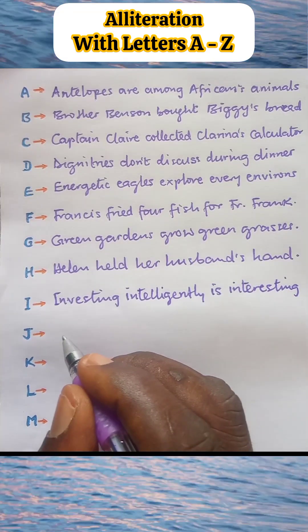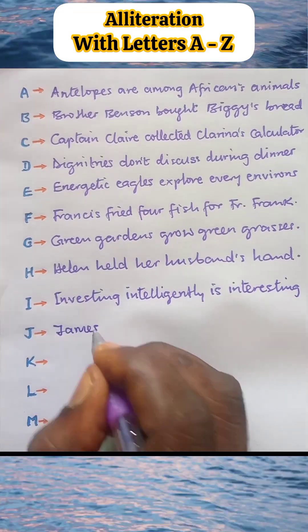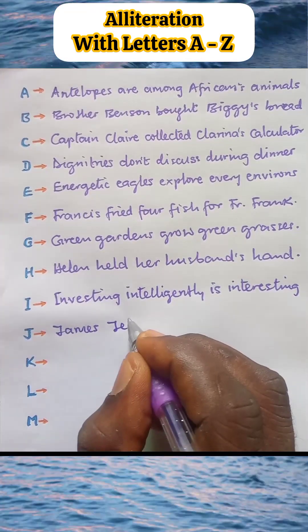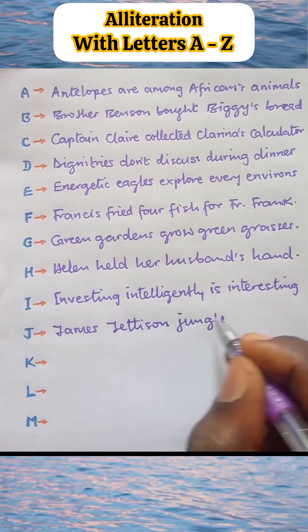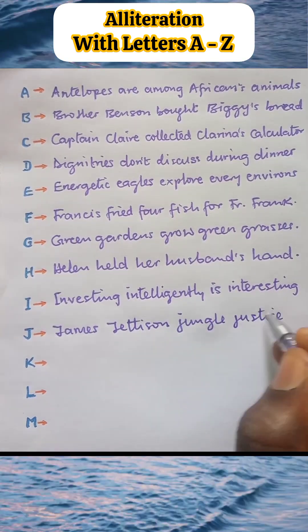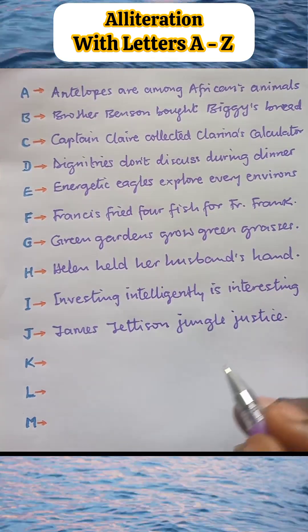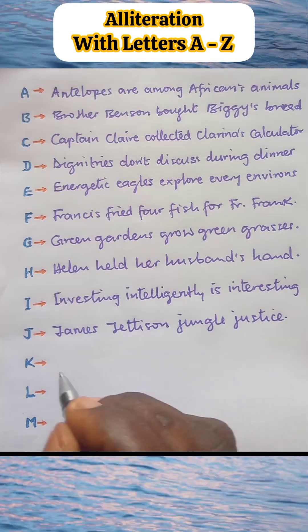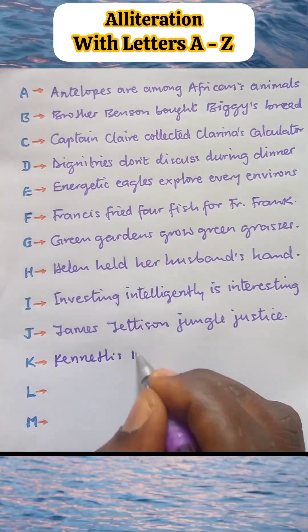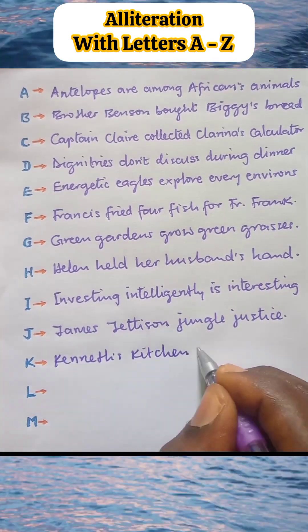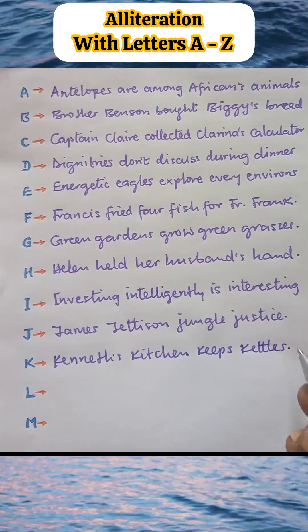Alliteration J: James jettisoned jungle justice. Alliteration K: Kenneth's kitchen keeps kettles.